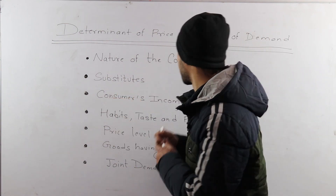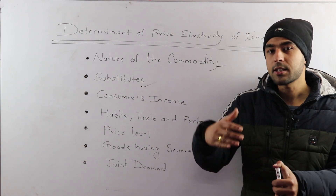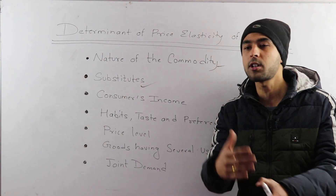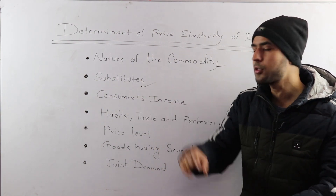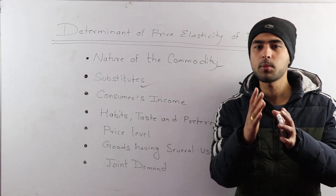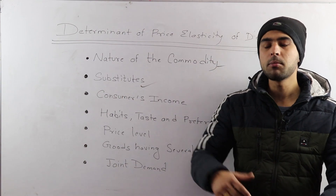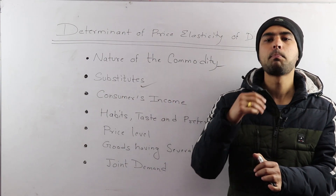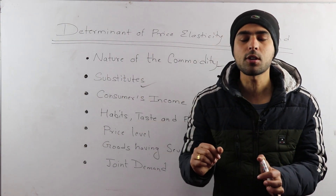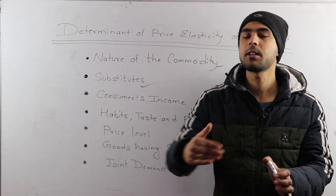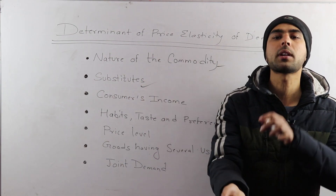The second determinant is the availability of substitutes. Substitutes are goods that can replace each other. For example, if I go to a hotel and order Pepsi, but if the price of Pepsi rises, I can buy Coke instead. If you buy Pepsi, I can replace it with Coke.